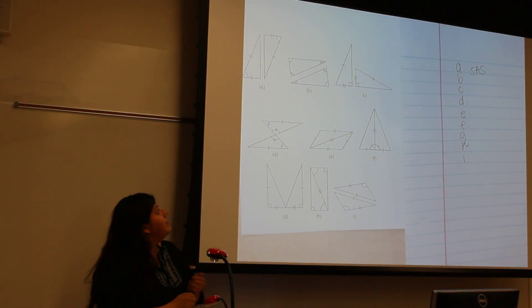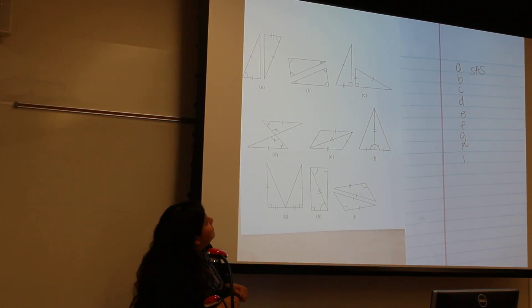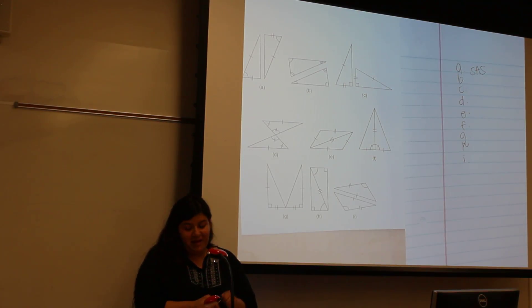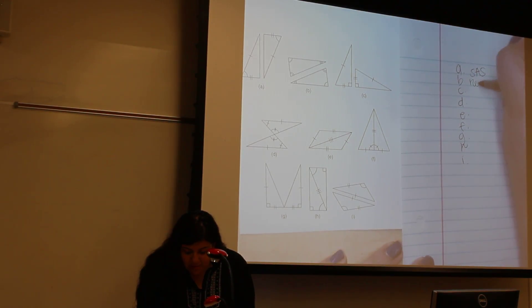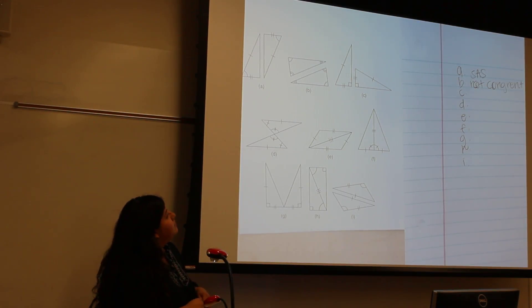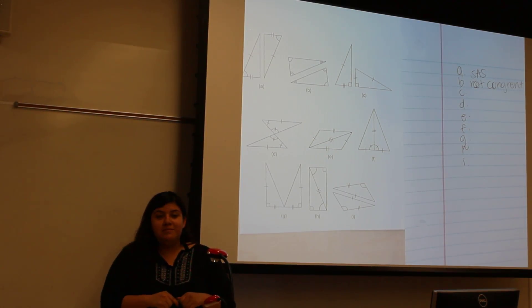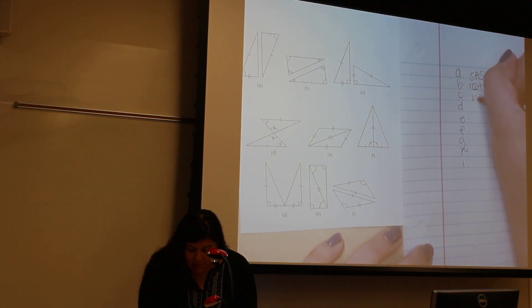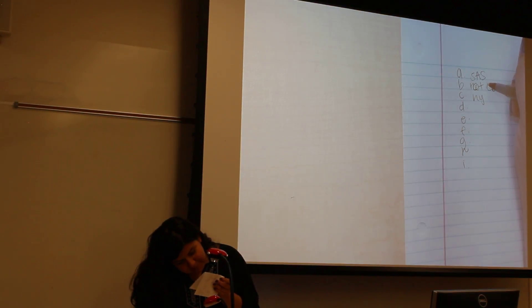B. They're not congruent. Why? Because none of the sides are congruent. Yes. Okay, C. Hypotenuse-leg? Yeah, hypotenuse-leg. Yes, HL.